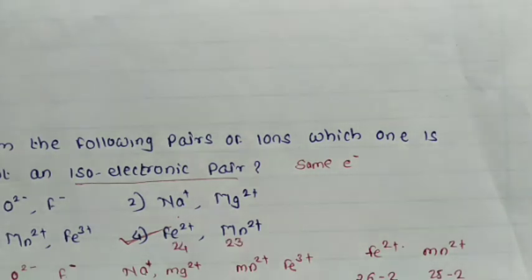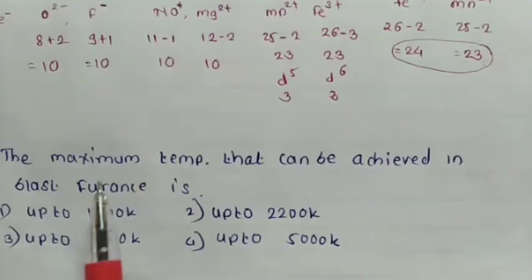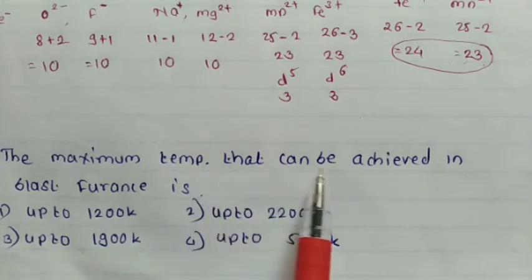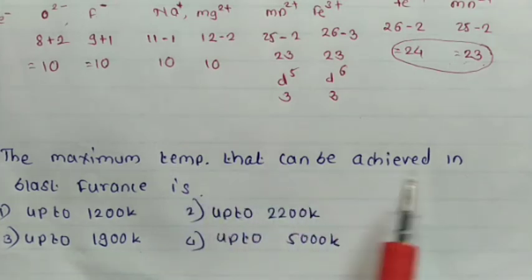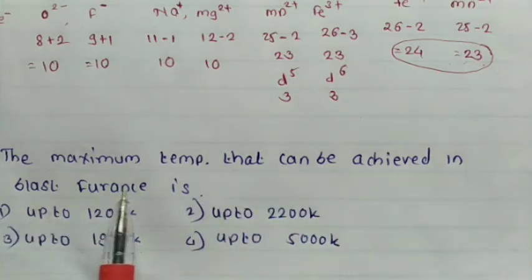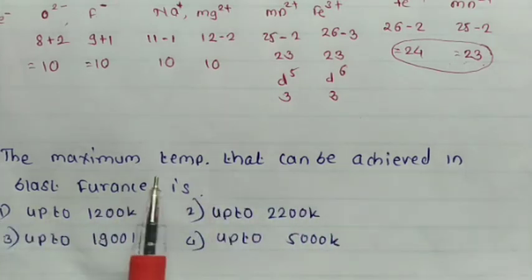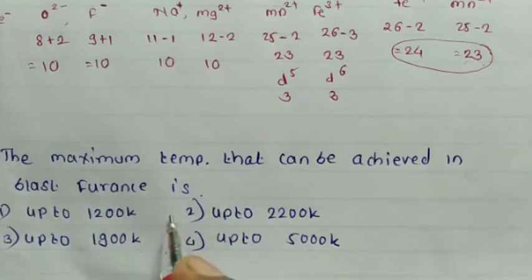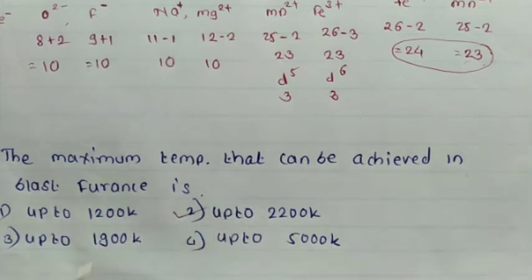See the next question: the maximum temperature that can be achieved in a blast furnace is 2200 Kelvin.